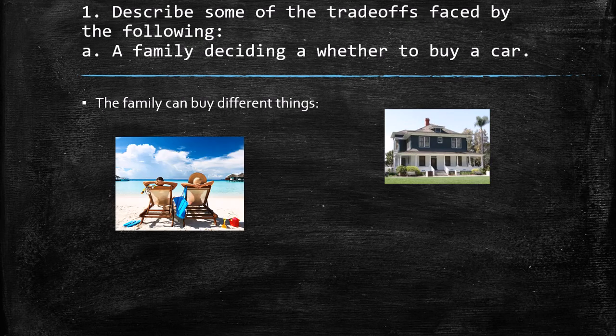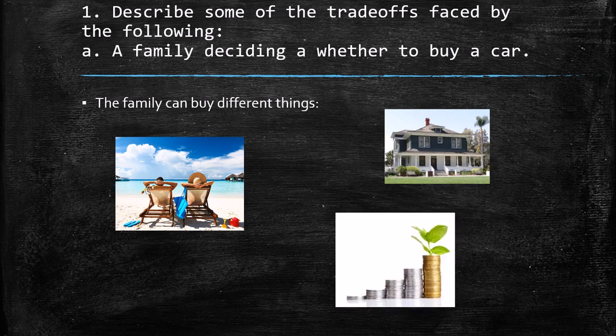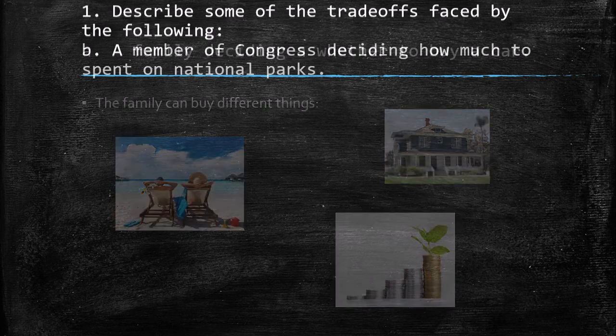What about vacation? Maybe instead of buying the car they can go on vacation. Or maybe they can save some money. Instead of buying a car, they have the trade-off between buying a car, saving the money, or putting away some money. These are the examples I chose for this case.